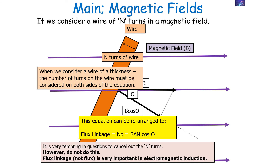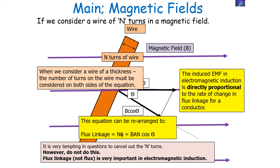If you look at the equation NΦ = BAN cos θ, it's very tempting to cancel out the N value on either side of the equation. However, do not do this, because magnetic flux linkage NΦ is very important in electromagnetic induction, which we'll look at later in the course. The induced EMF in electromagnetic induction is directly proportional to the rate of change in the flux linkage for a conductor.